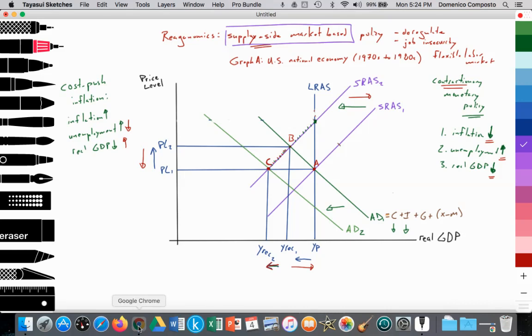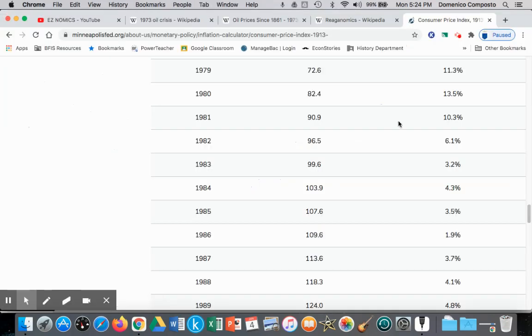So we can see that those methods of contractionary monetary policy and supply-side market-based policies in the 1980s were successful in reducing inflation as a result of cost-push inflation. Again, we see it falling from 13%, 10%, 6%, 3%, 4%, 3%, to 2% by 1986.